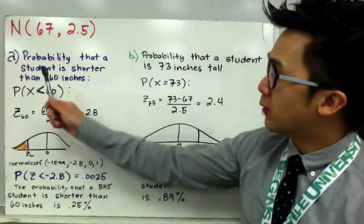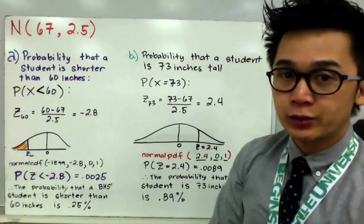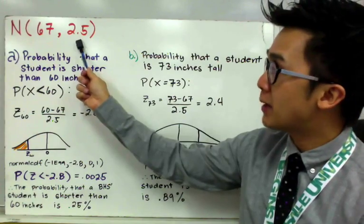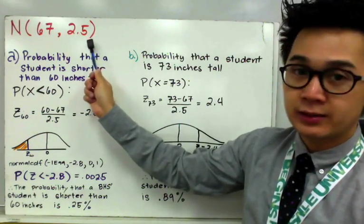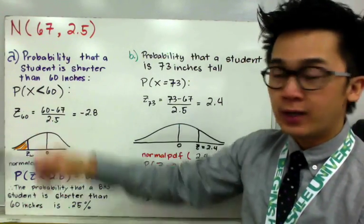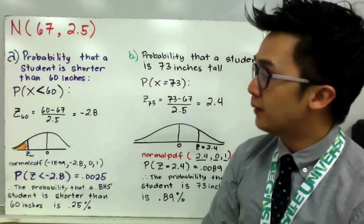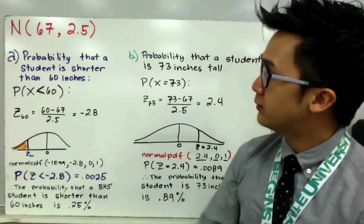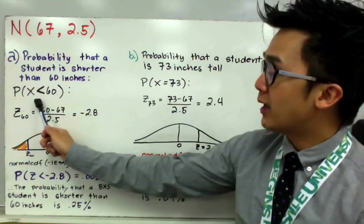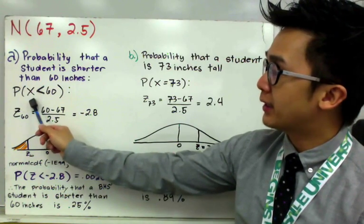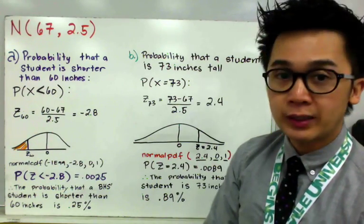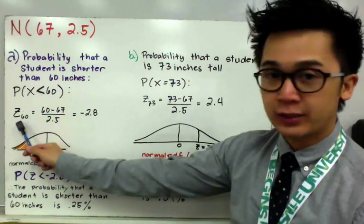For the first problem, we know that the distribution is normally distributed with a mean of 67 and a standard deviation of 2.5. This particular notation is what we use in statistics to denote that we are given the mean and standard deviation of a normally distributed distribution. We can now use our formula in finding the probability of a student being shorter than 60 inches in Barstow High School. Our notation is P(X < 60), and to use our normal distribution, we need to standardize our score of 60 to a Z-score value.